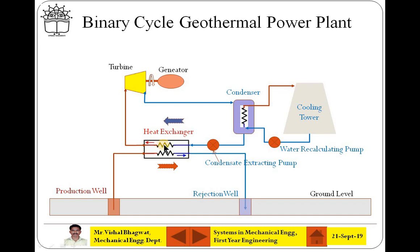For example, isobutane, pentane or freon. When those organic liquids are heated, those will be easily converted into steam. Here those organic materials converted into steam are passed to the turbine. As a result, steam will be expanded and turbine will be rotating. The rotation of the turbine shafts are connected to the generator and then electricity can be produced.